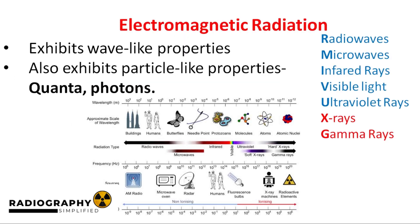EM radiation possesses both wave-like and particle-like properties. As waves, they are transmitted with a speed, frequency, and wavelength. And even though they do not have a mass, as particles, they are transmitted in discrete amounts called quanta. Different sources of electromagnetic radiation are grouped on something called the electromagnetic spectrum. On the spectrum we have radio waves, microwaves, infrared rays, visible light, ultraviolet rays, x-rays, and gamma rays. This is listed in order of increasing energy and frequency and decreasing wavelength.